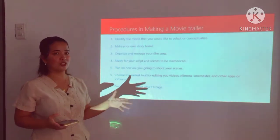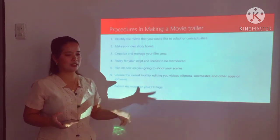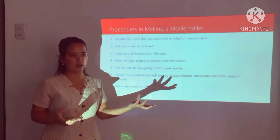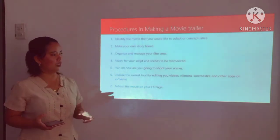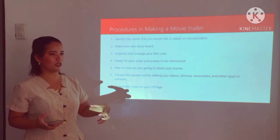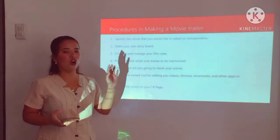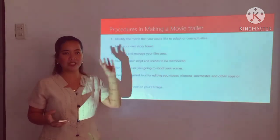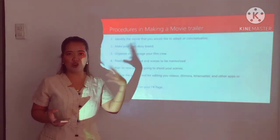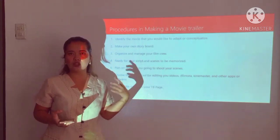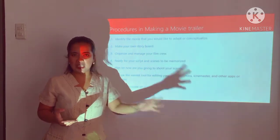Ready your script and scenes to be memorized. Now that you have organized your film crew, organize the scenes and make sure that the characters will memorize their lines so that it will be easy to shoot the film. Plan how you're going to shoot your scenes at a particular place, but make sure that the place is safe. You are already Grade 12 — I know you are responsible enough to shoot while thinking of your safety.